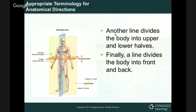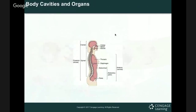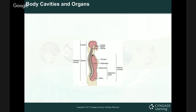Besides directional terms, there are certain body cavities we should keep in mind — that's where the organs are housed. The cranial cavity is where the brain is housed; without it intact, the ability to sense the world is gone. The thoracic cavity contains the lungs and heart. The abdominal and pelvic cavities house the digestive organs, as well as urinary and reproductive organs. Having a relative understanding of where these cavities are helps us think about all the vital organs within them.